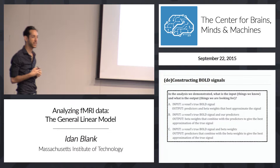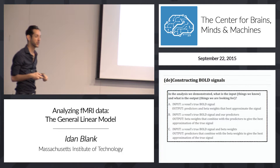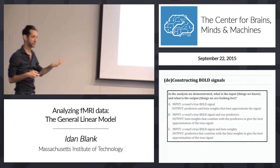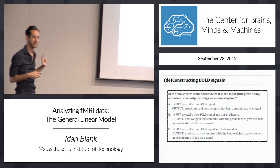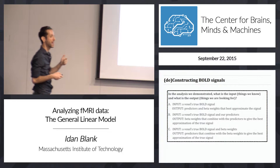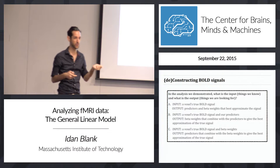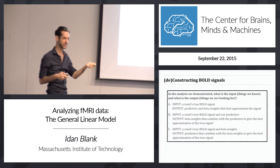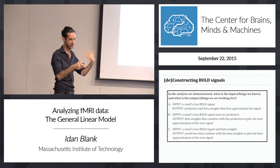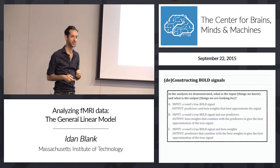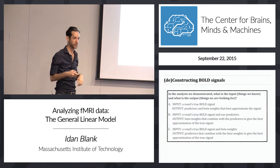Do you get the beta weights when you start this analysis? Do you bring them with you from home? No, you're looking for them. So the beta weights are definitely part of the output. We know the voxels, and we know the predictors — we are the scientists, we build the experiment, we generate the predictors. We bring those two with us and ask the analysis to find the beta weights.